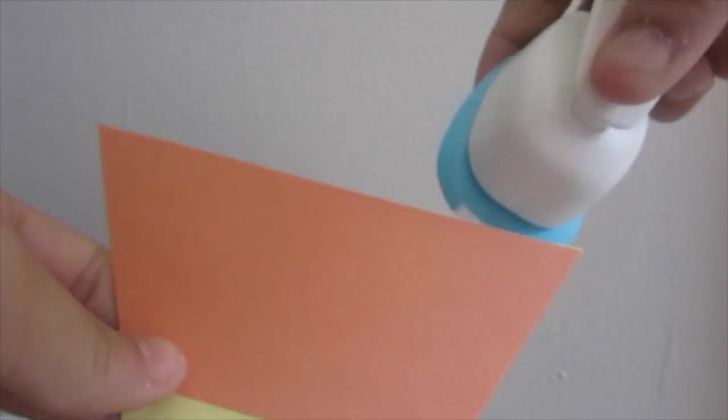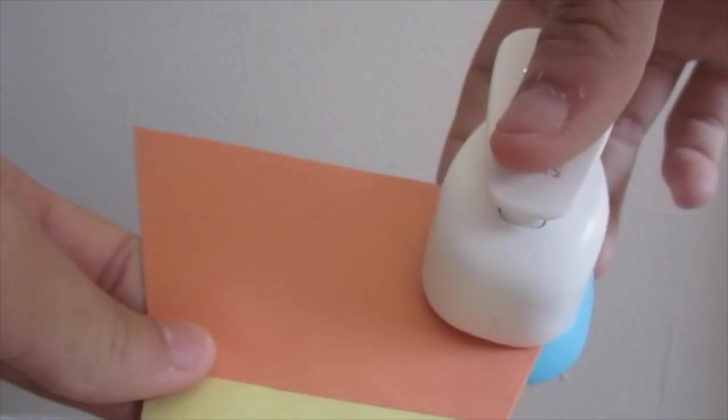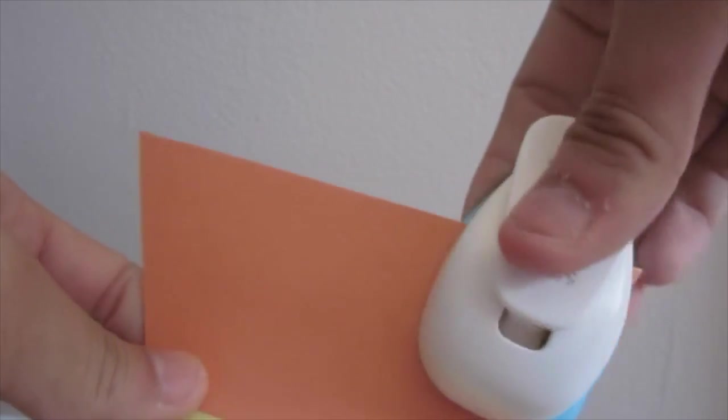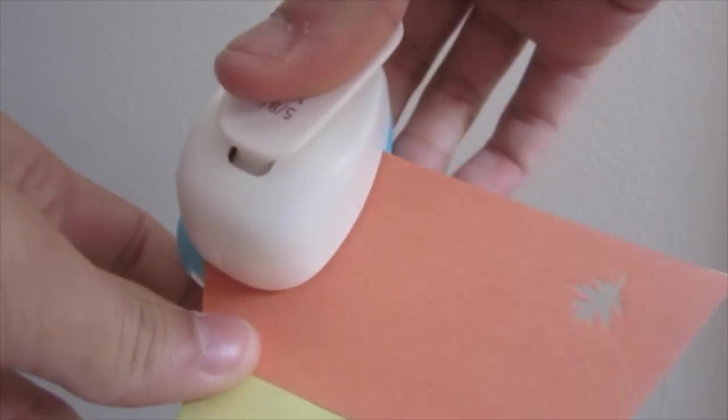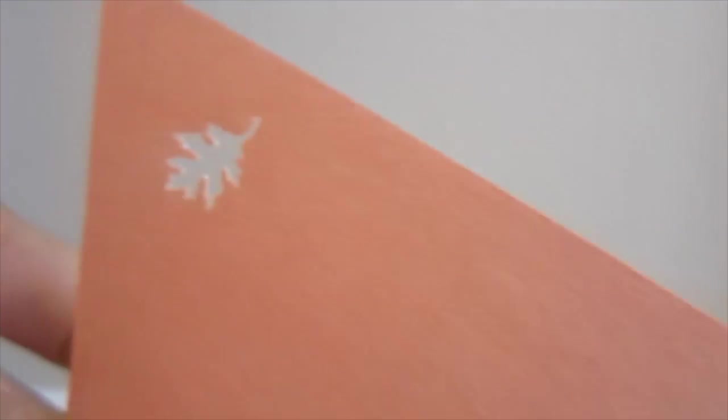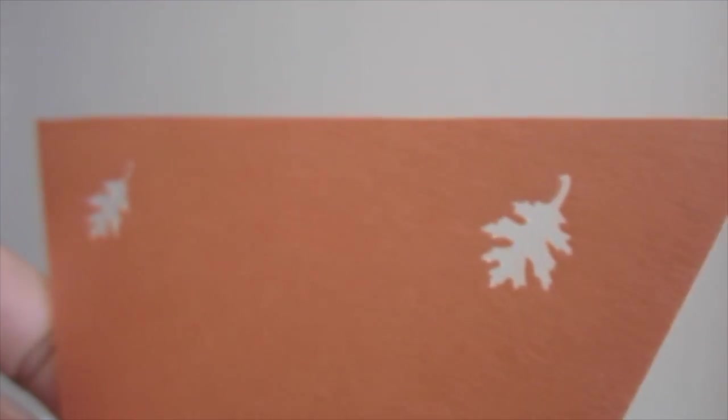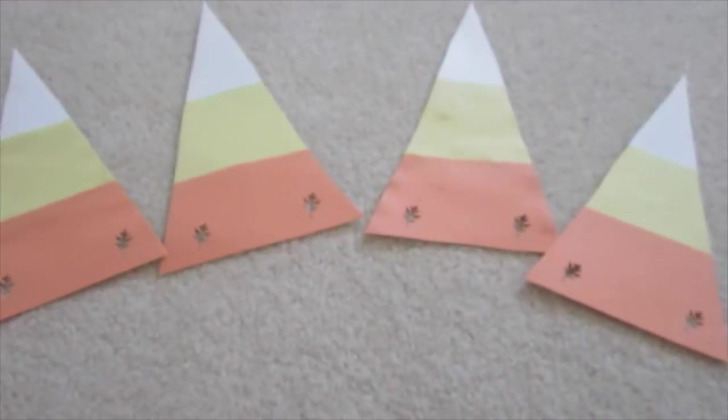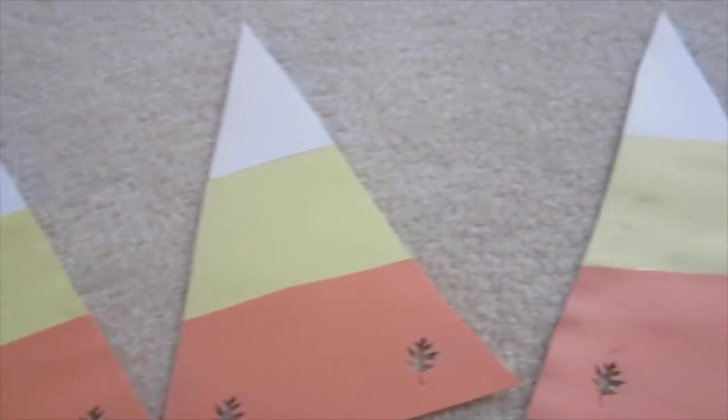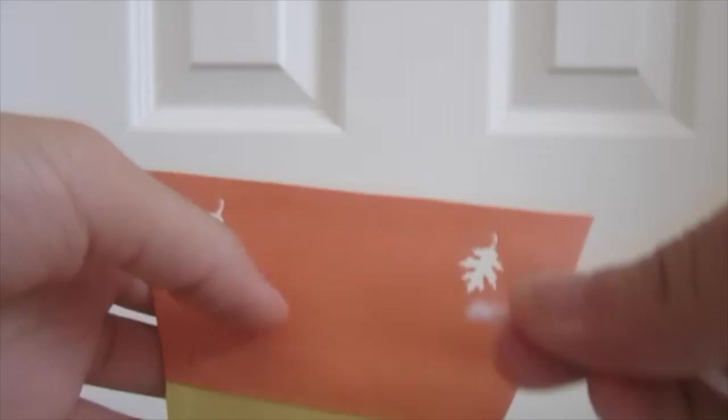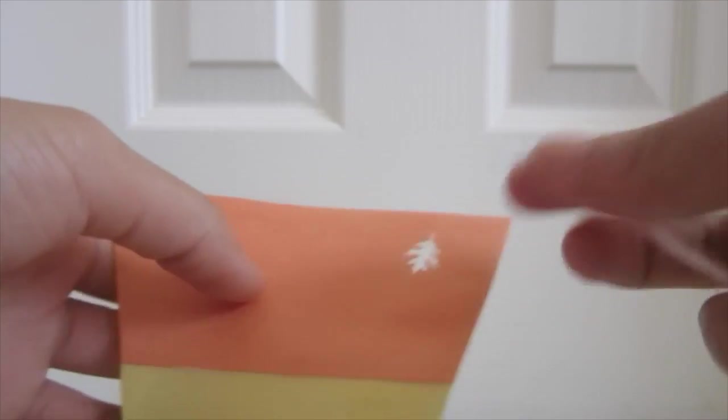Next you want to hole punch the candy corn. As you can see, I'm using my leaf one - just punch it in the bottom. I'm showing you a close-up of how the leaves look. It's really pretty. The punches are on the bottom.